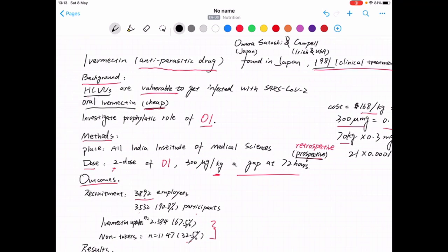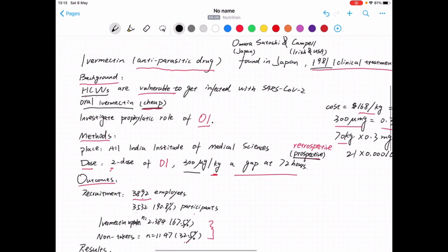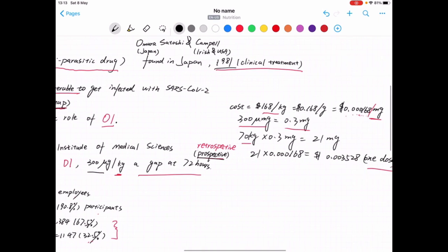So according to the math, 300 micrograms per body weight. So 300 micrograms equals 0.3 milligrams.